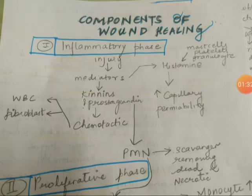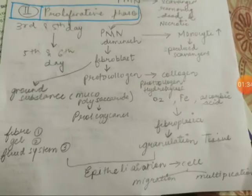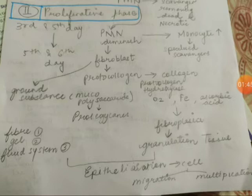The next phase is the proliferative phase. This occurs from day three to day five. In this phase, the monocytes come in — monocytes are specialized scavengers of dead and necrotic tissue — and PMNs are diminished.